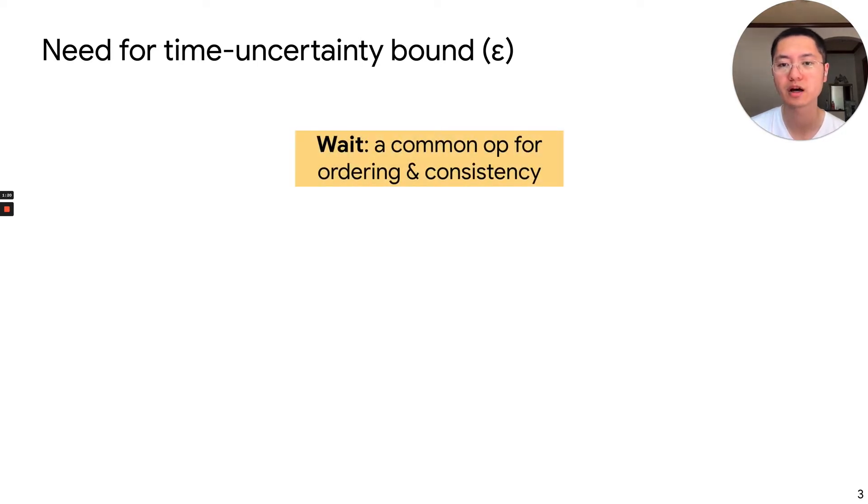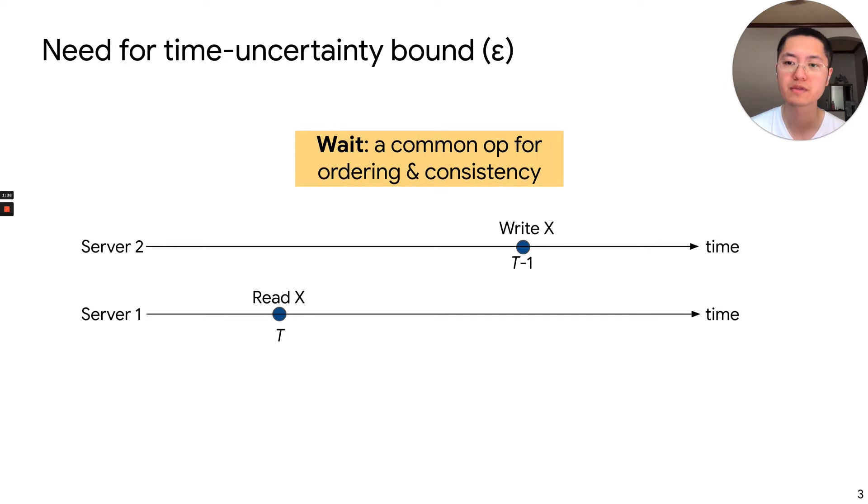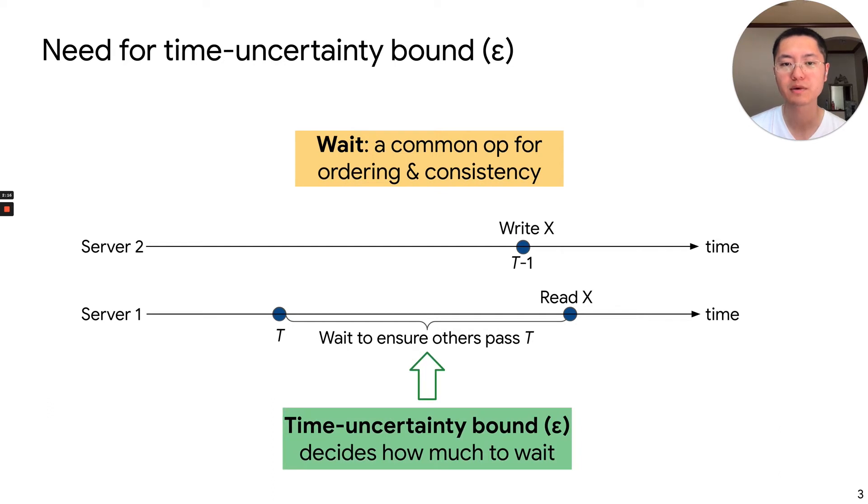I will use an example of the wait operation in distributed systems to show why it's important. The intuition is that one server may read a value x at local time t. Since the clocks of the two servers may be different, server 2 may write to value x later, but with an earlier timestamp. And this can cause inconsistency. A simple solution is for server 1 to wait for some time until it is guaranteed that all servers must have passed t. So the key question is how long it has to wait. If it's not long enough, it can cause mistakes in applications. And it's unacceptable because it can affect billions of users. So we must have a time uncertainty bound to decide how long to wait. And this bound must guarantee correctness.